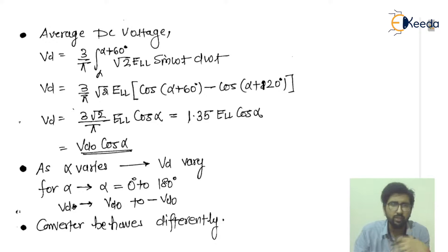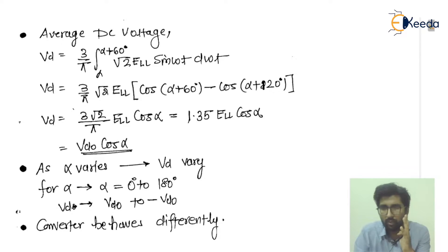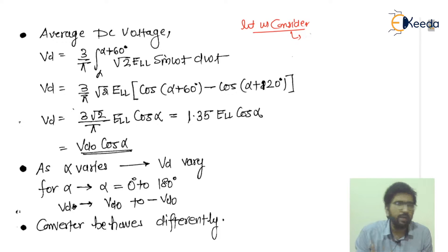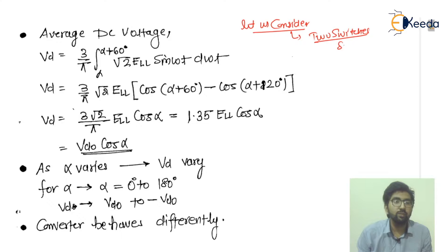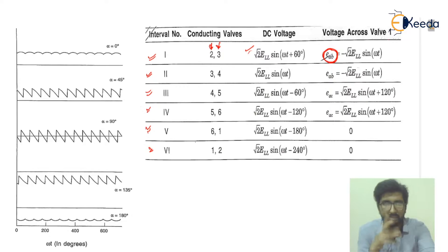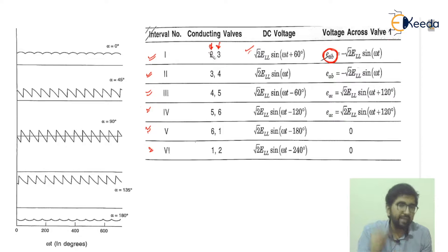When we talk about the average DC voltage, we consider the average of the VPN — the three voltages VAB, VBC, and VCA. We are operating with two switches, switch number two and switch number three. If we are taking switch number two and switch number three, then we can operate with the VAB voltage. From the last lecture, we discussed VAB, and the conducting valves are two and three.